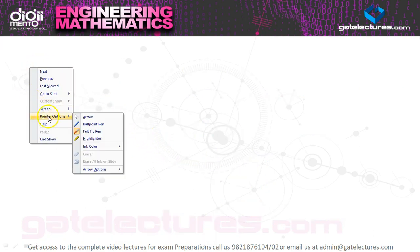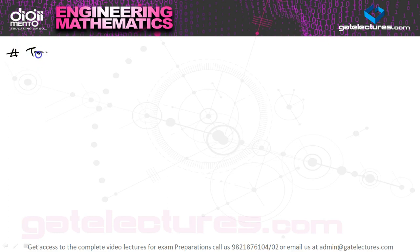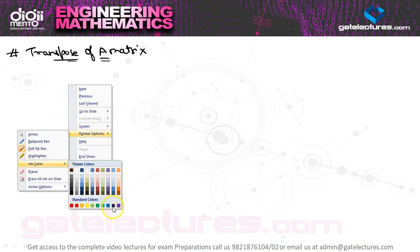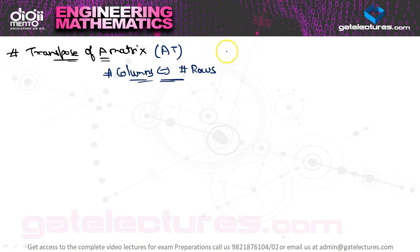Now let's have a look at the transpose of a matrix. I am guessing that you know how to find the transpose of a matrix, so I am not covering this in depth. The transpose of a matrix: all the rows are interchanged with the columns and vice versa. Transpose of a matrix is denoted by Aᵀ or A to the power of T. The number of columns interchange with number of rows. Matrix A can be a square matrix or a rectangular matrix or any sort of matrix.